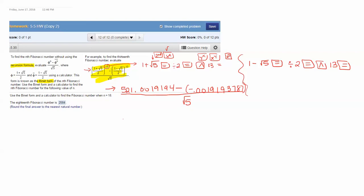So 521.0019194 minus negative. Right down here this is a negative not another minus. Your negative button is usually on the bottom row of your calculator next to the decimal point. So you do minus negative 0.0019193787. Always press equals before you hit division. So hit enter or equals.